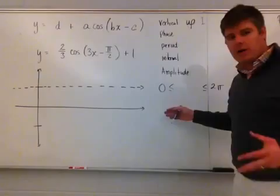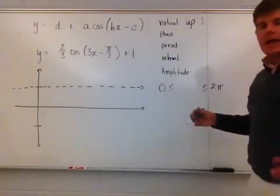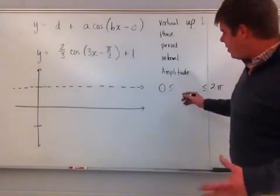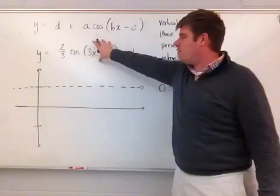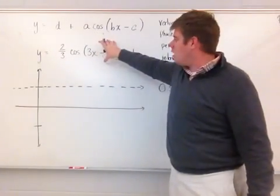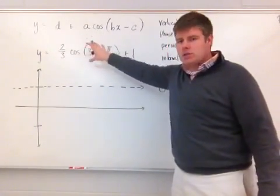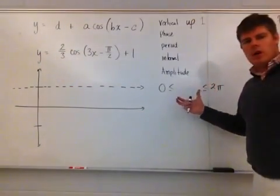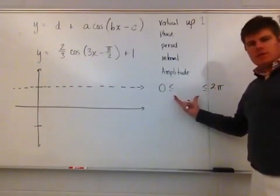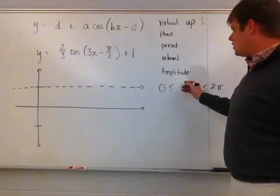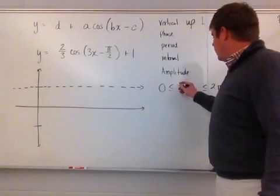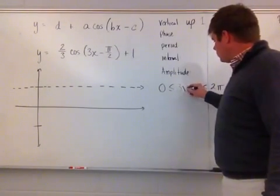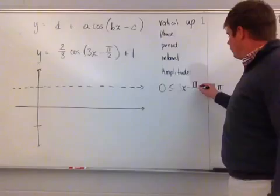I have to change my original domain of zero to two pi by setting up the compound inequality of taking whatever you're taking the cosine of and plugging it into the original statement of the domain of the cosine function. This now becomes zero is less than or equal to three x minus pi over two.